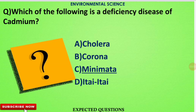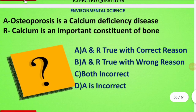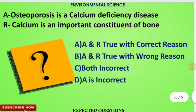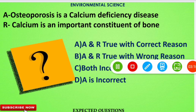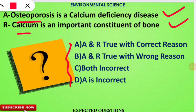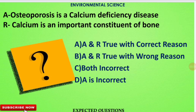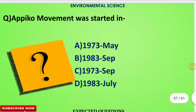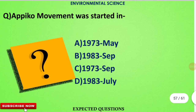The next question is an assertion and reasoning type. The assertion states that osteoporosis is a calcium deficiency disease, and the reason given is that calcium is an important constituent of bone. The correct option is option A — both statements are correct and the reason is the correct explanation of the assertion.